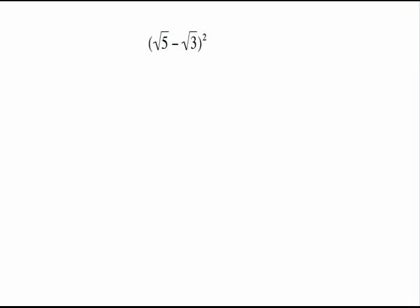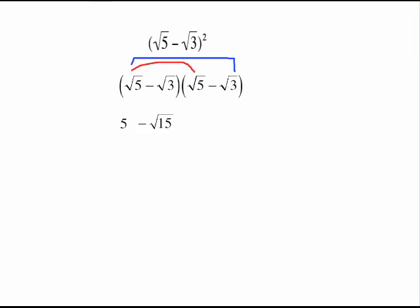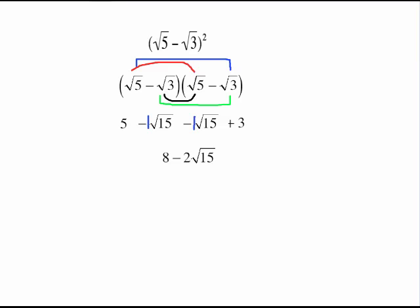Here's another squaring problem. Write out your two binomials: square root of 5 minus square root of 3, times square root of 5 minus square root of 3. Do your FOILing. Square root of 5 times square root of 5 is just 5. Across the outside: radical 5 times radical 3 is negative radical 15. Inside product: radical 3 times radical 5 is another negative radical 15. Be careful — the last product is a negative times a negative, which is positive, and square root of 3 times square root of 3 is positive 3. Combining like terms: 5 plus 3 gives 8, and negative radical 15 plus negative radical 15 gives negative 2 radical 15 — so the answer is 8 minus 2 radical 15.